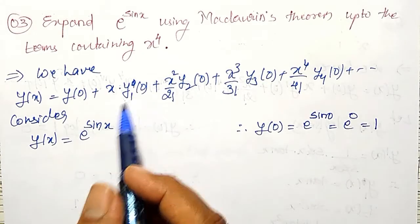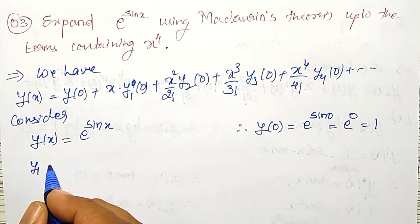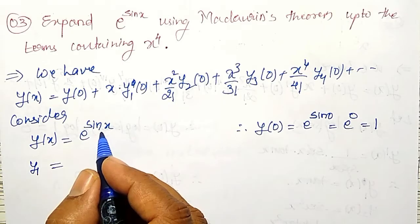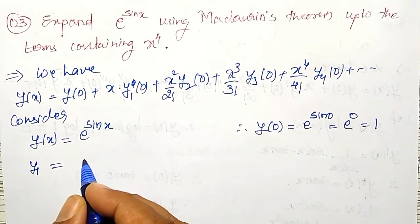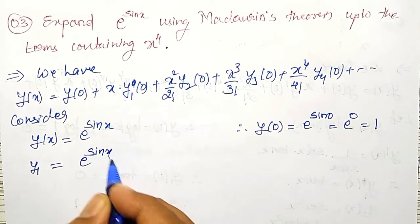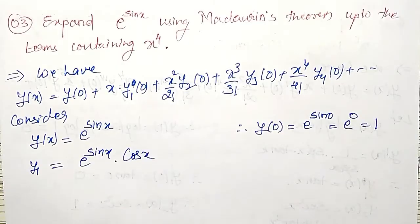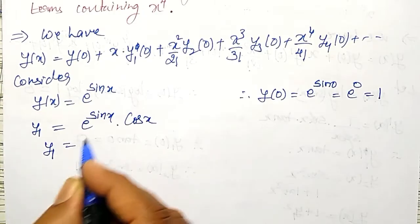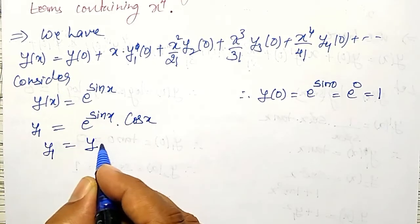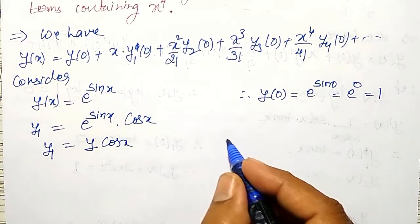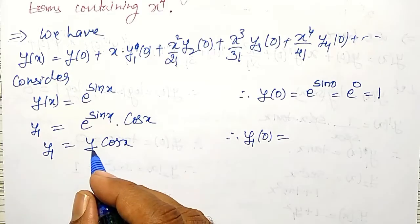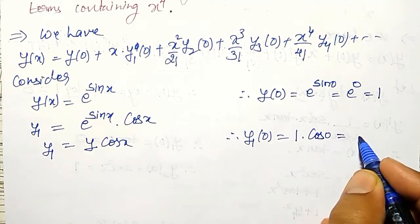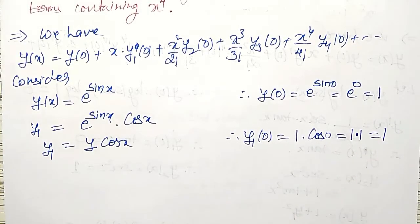The first derivative y1 is equal to differential of e to the power sin x. Applying the chain rule, e to the power sin x into differential of sin x is cos x. I can simplify this as y1 equal to y into cos x. Therefore, y1 at 0 is y(0) which is 1, into cos 0 which is also 1, giving y1(0) equal to 1.